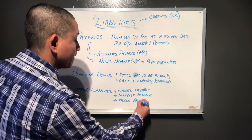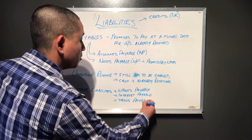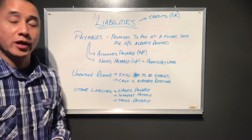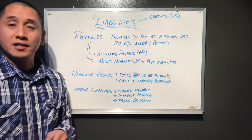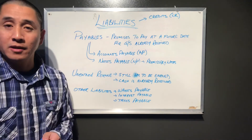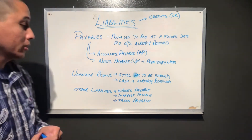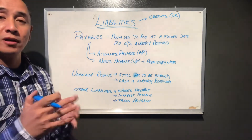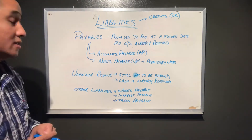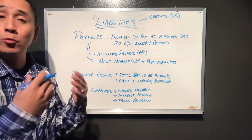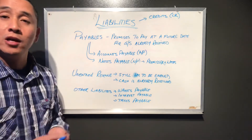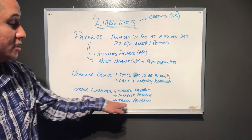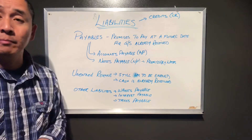One last one — which everyone loves — is taxes payable. Because generating income means the tax man is always there, we sometimes have to reserve a certain amount and account for taxes. If we have not paid or remitted that to the government yet, we would incorporate a taxes payable liability account.